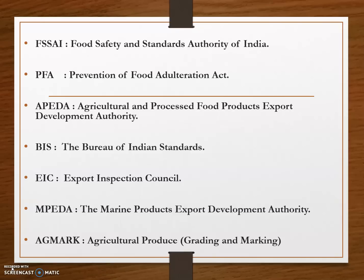MPEDA, the Marine Products Export Development Authority, was formed in 1972. Next is AGMARK, which stands for Agricultural Produce Grading and Marking. It deals with agricultural and animal husbandry products including ghee and butter. The quality parameters cover mainly compositional characteristics and adulteration aspects.